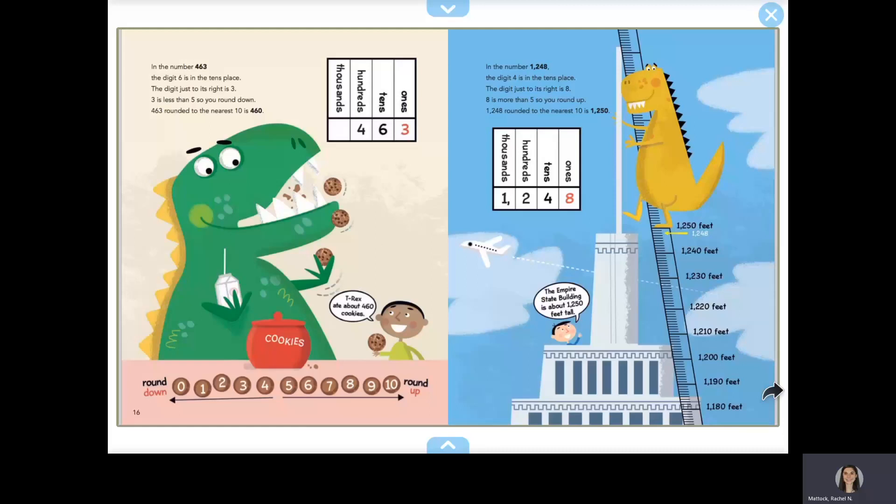In the number 1248, the digit 4 is in the tens place. The digit just to its right is 8. 8 is more than 5, so you would round up. 1248, rounded to the nearest 10, is 1250.